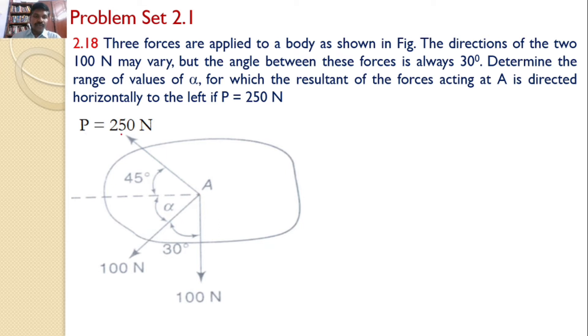One force is 250 newtons and the angle made by the 250 newtons with the horizontal is 45 degrees. And there are two other forces 100 newtons and 100 newtons acting on the body. Angle between those two 100 newtons is 30 degrees.